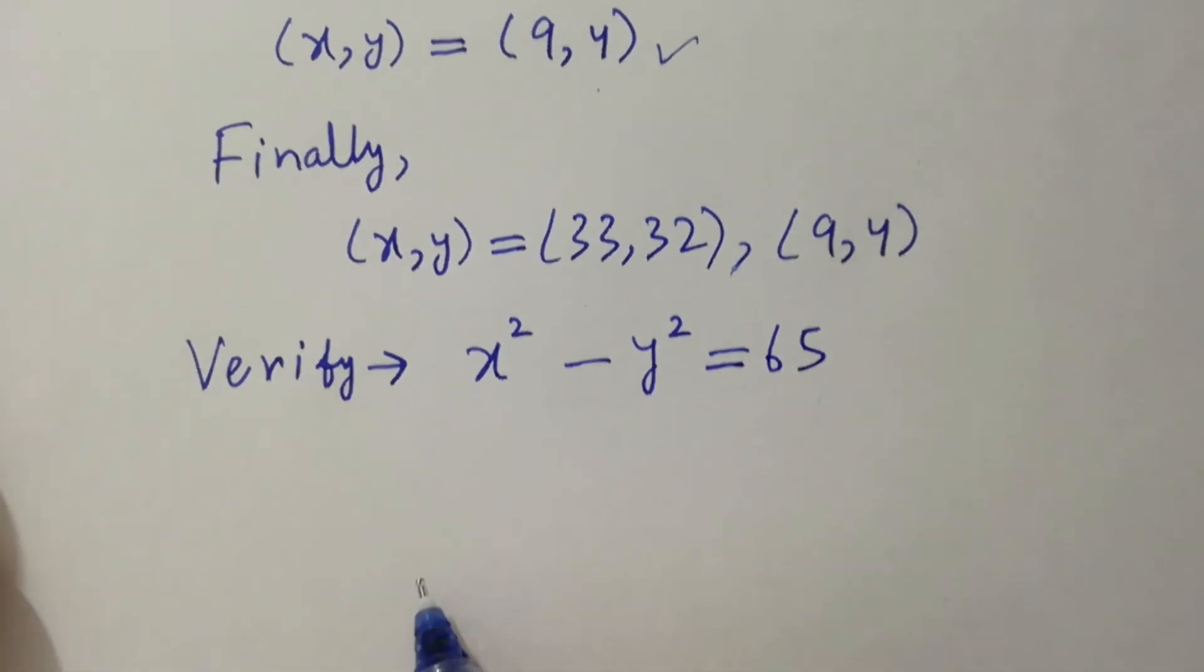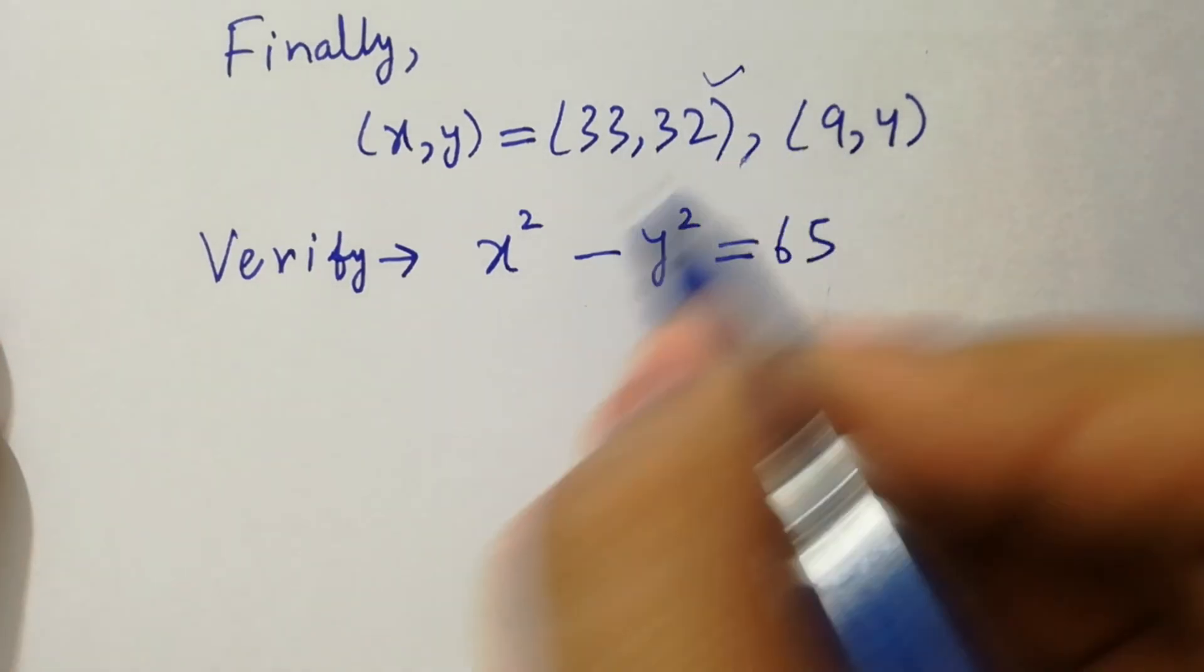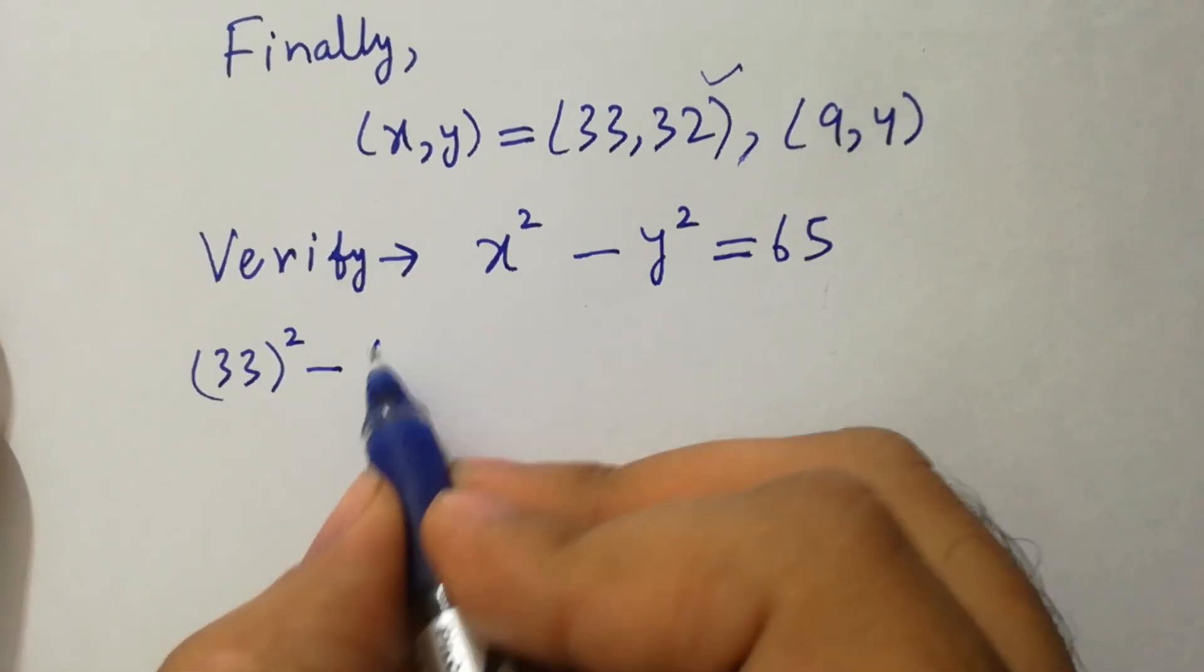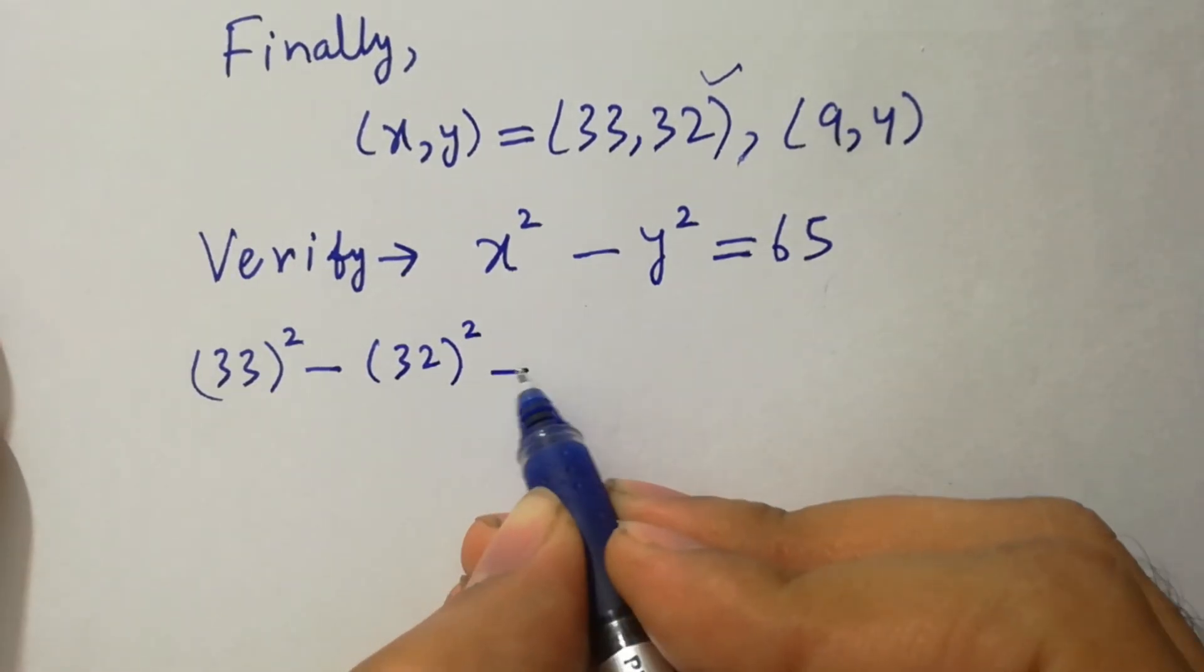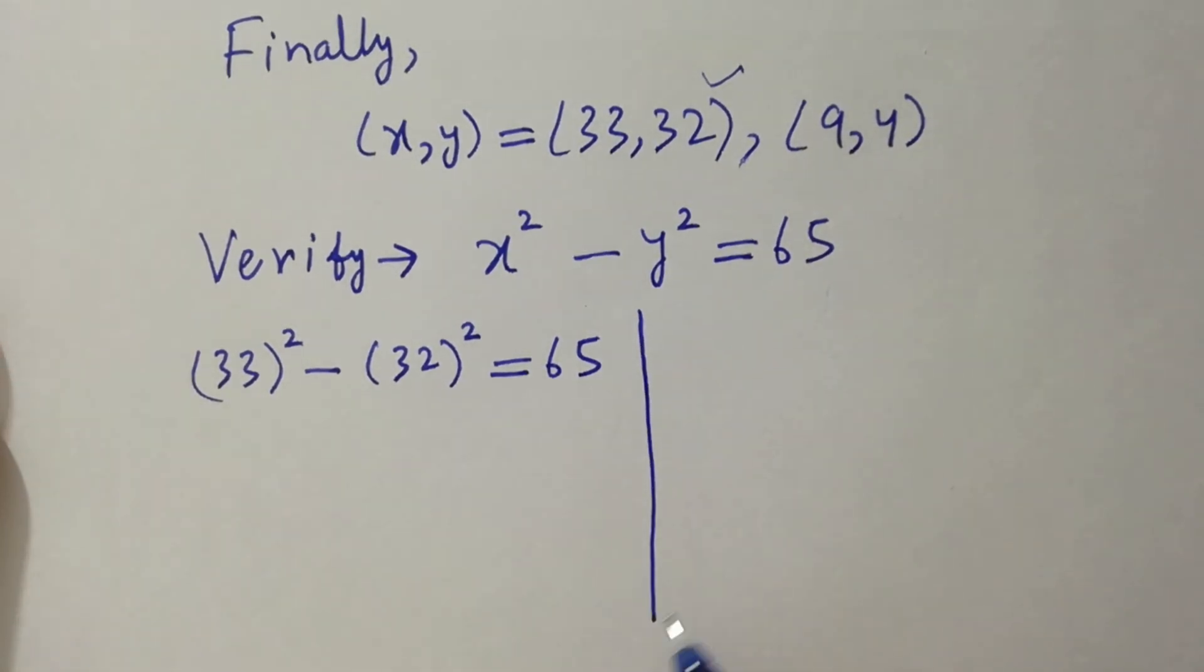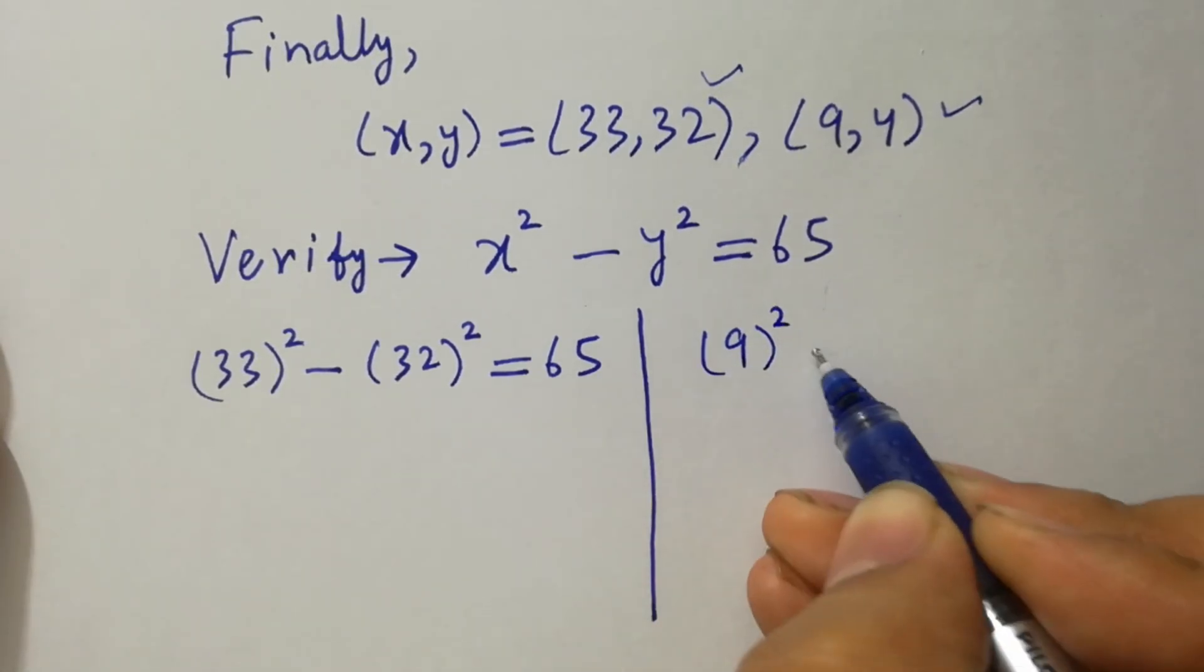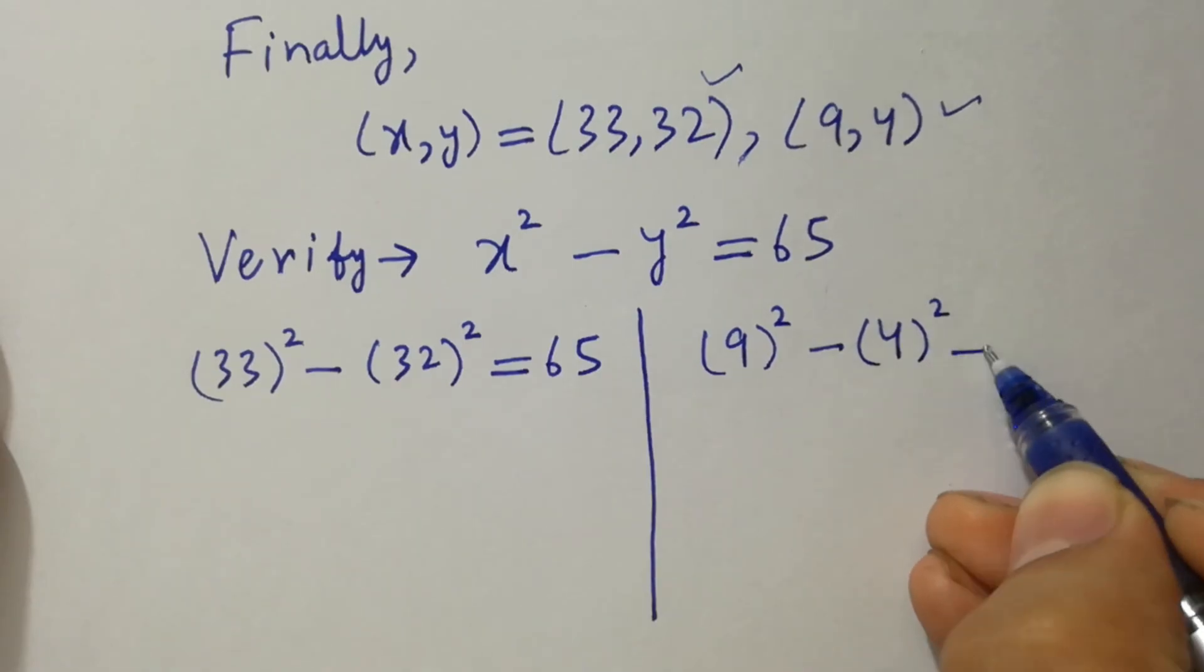Put the values of x. We have 33 squared minus 32 squared equal to 65, and 9 squared minus 4 squared equal to 65.